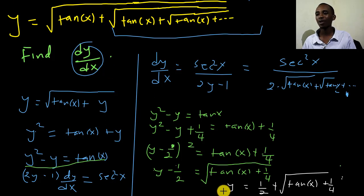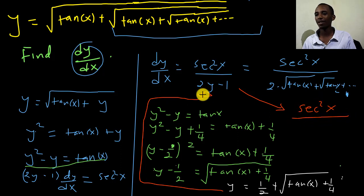So I'm going to substitute this value of y here into the expression for dy dx. That's going to give us a more pleasant answer than the one we had at first here. So that's sec squared x divided by 2 times y. If I multiply all this by 2, that's going to be 2 times a half, which is 1, and then 2 times this, that's going to be plus twice the square root of tan x plus 1 over 4, and then minus 1.